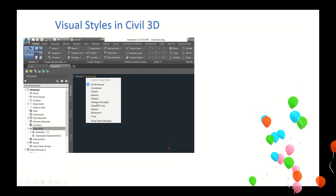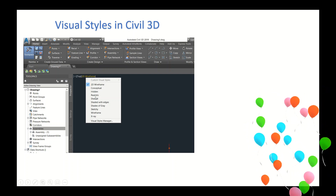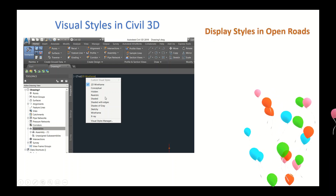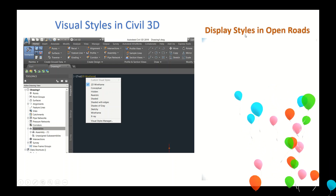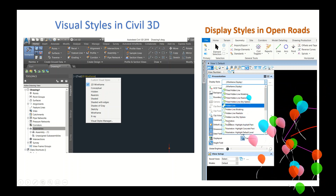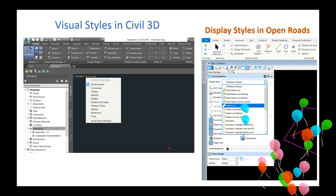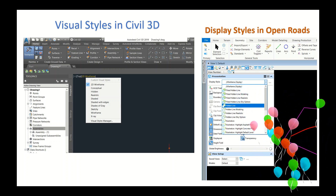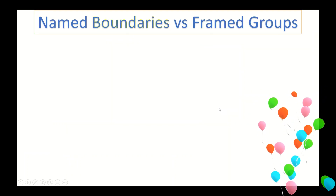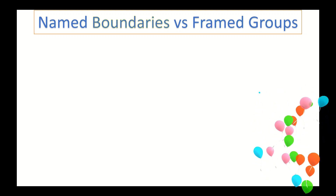Visual Styles in Civil 3D offers about ten options: 2D wireframe, conceptual, hidden, realistic, shaded, and more. The equivalent in Open Roads is Display Styles, which includes wireframe, illustration, ignore lighting, smooth, and transparent, among others. These two features are very similar in both platforms.